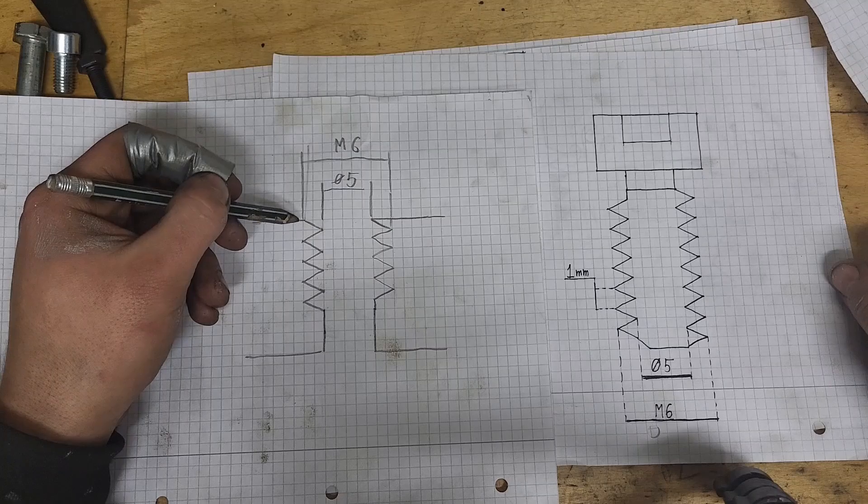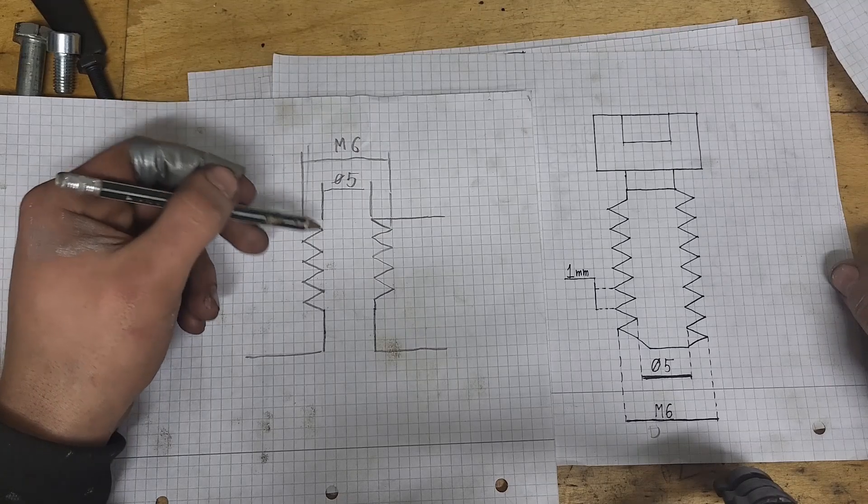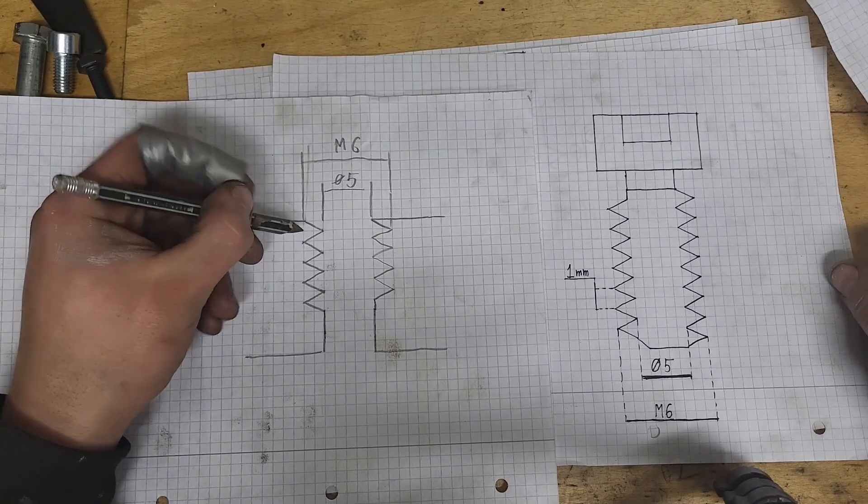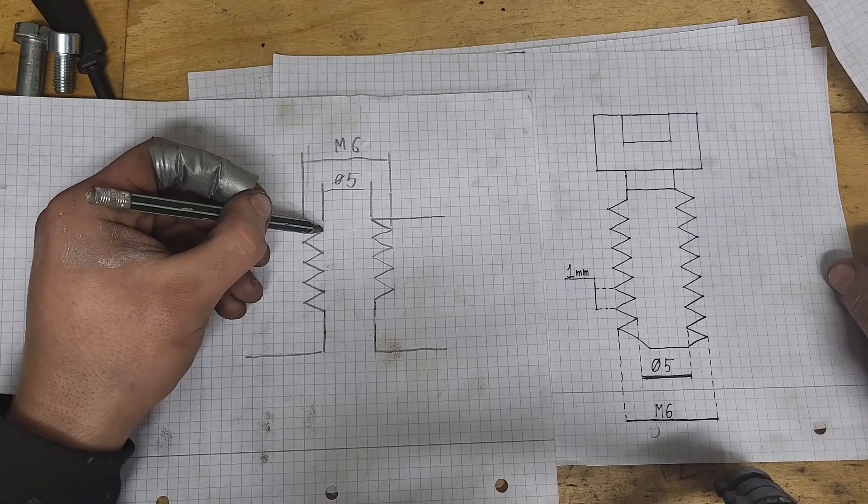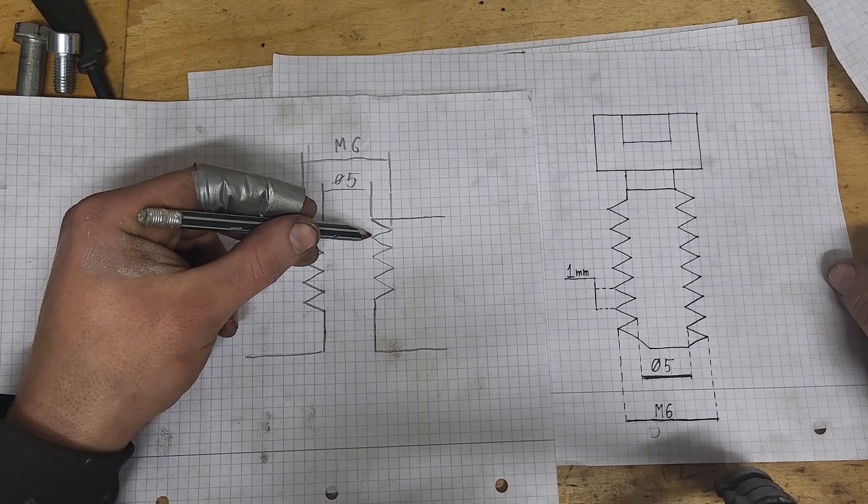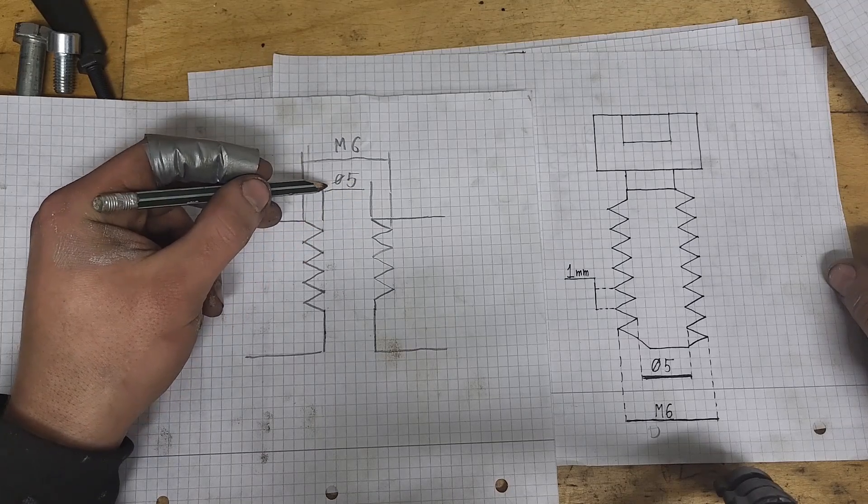For the internal thread, the analogy is the same. When we look at a cross section, the outermost peak to the outermost peak will always be the thread dimension. And the distance between the innermost peaks is the pre-drilling dimension.